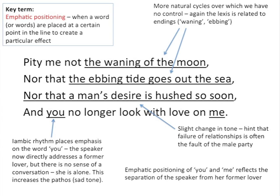Now there is a slight change in tone. She says 'nor that a man's desire is hushed so soon', giving a hint that the failure of relationships is perhaps the fault of the male party from her perspective. Then she suddenly addresses a particular person, saying 'and you no longer look with love on me.' This is a good example of where the iambic rhythm places emphasis on the word 'you', and the second person address shows us very clearly that the speaker is addressing a former lover. But despite that, there's no sense of a conversation — no reply, no response — and we know that she's alone, which increases the pathos.